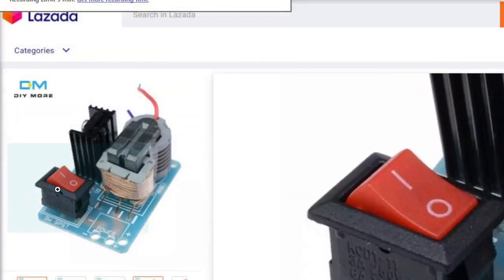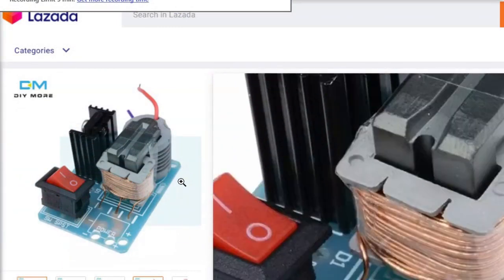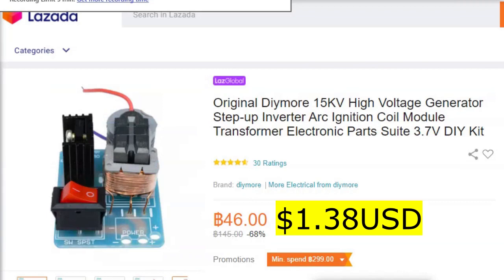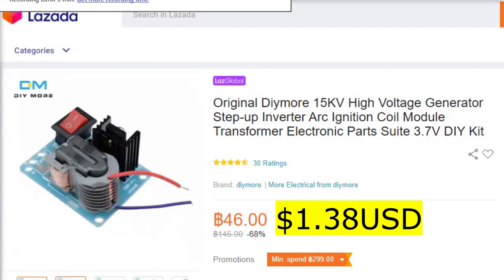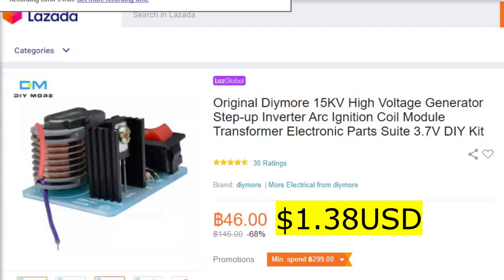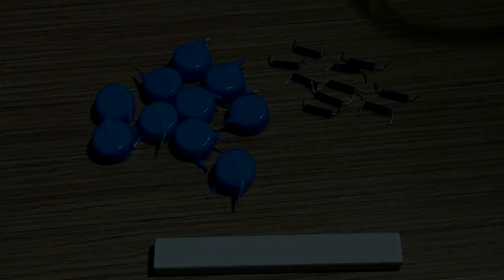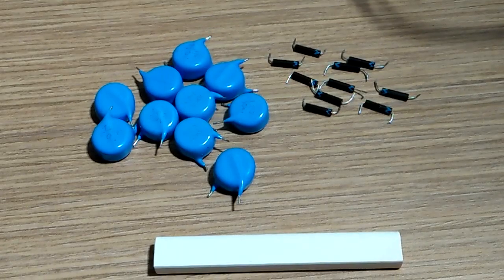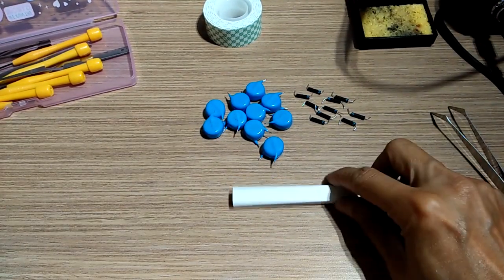For the step-up transformer, I bought this small 15kV high voltage generator on the internet. This is sold as a kit, so requires some assembly. So in theory, with the 15kV output of this module, and the 5-stage cascade, it should give us a final output of at least 100kV. That is the standard output of most professional powder coating guns.